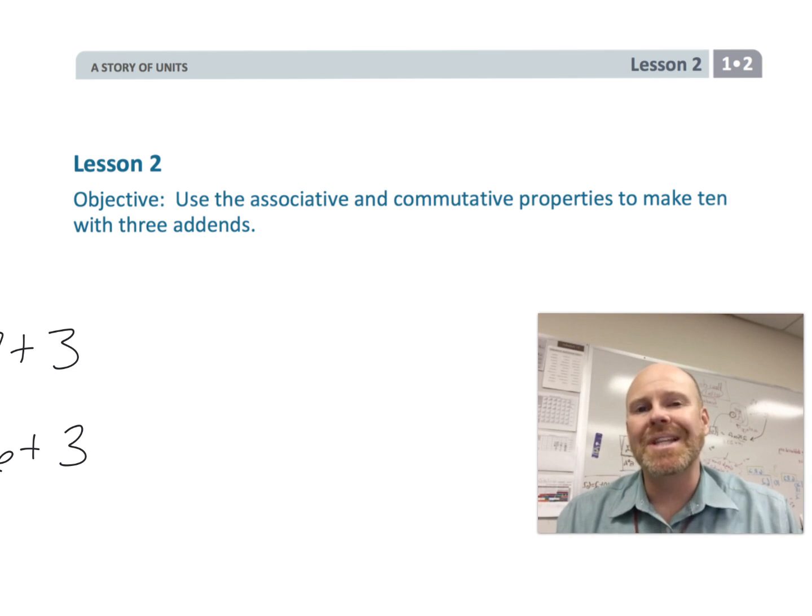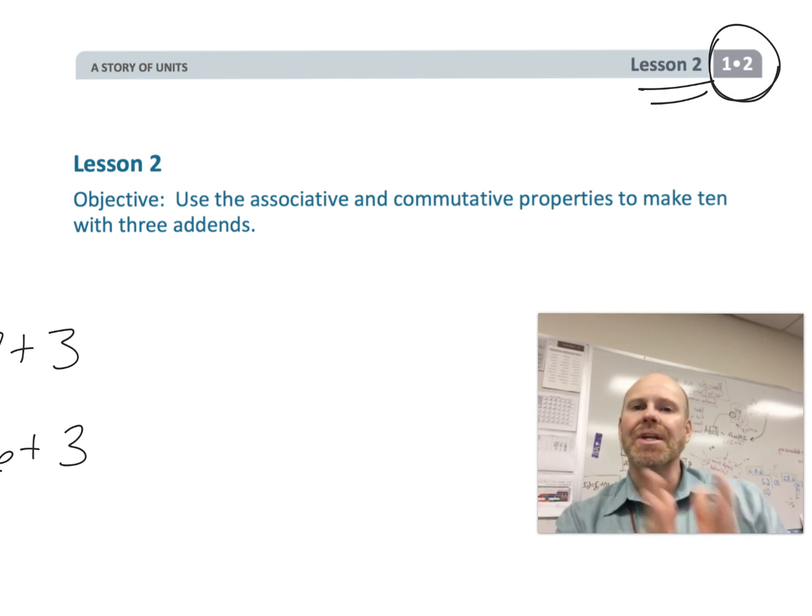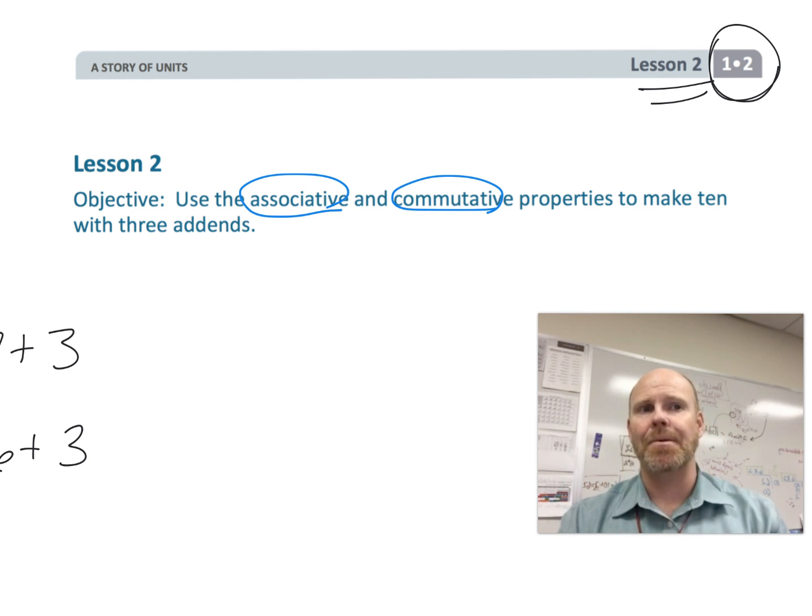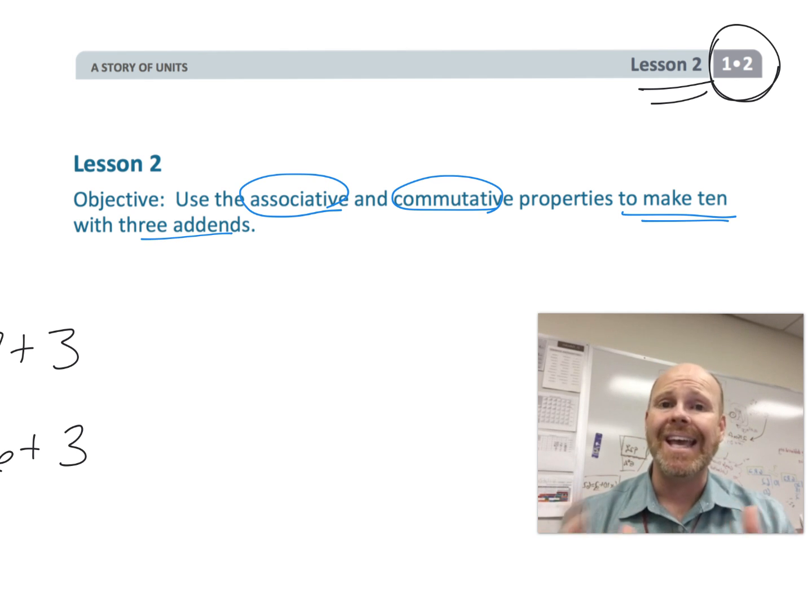All right, this is first grade module two, lesson two. In this lesson, we're going to continue what we started last lesson, where we are going to be using the associative and the commutative properties to add numbers together to make 10. This time, we are going to continue using three addends.